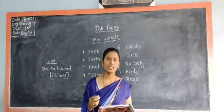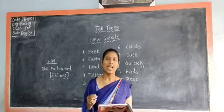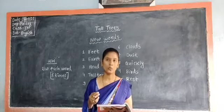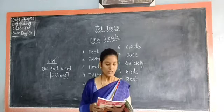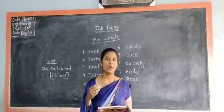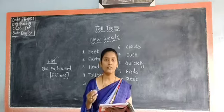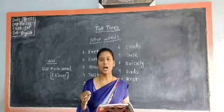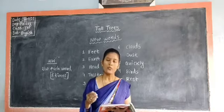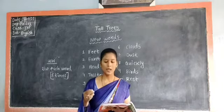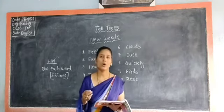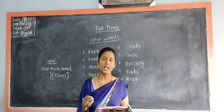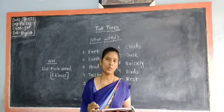The poet describes the tall trees as human beings because they share the qualities of human beings. We have feet, and in the same way trees also have feet in the earth — that means the roots of the trees are in the earth. Just as we stand on our feet, trees also stand on their roots. So here the roots of the trees are compared with the feet of human beings.